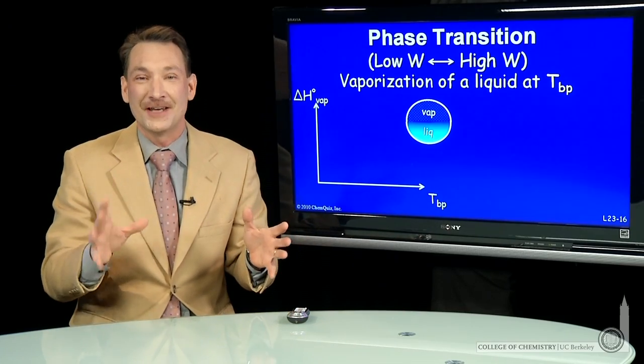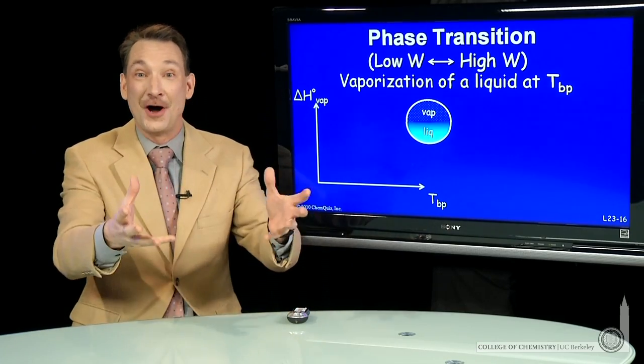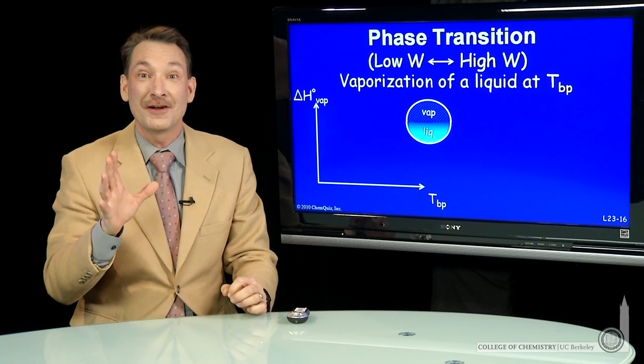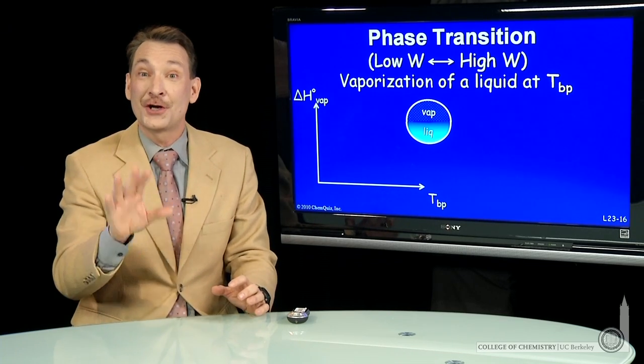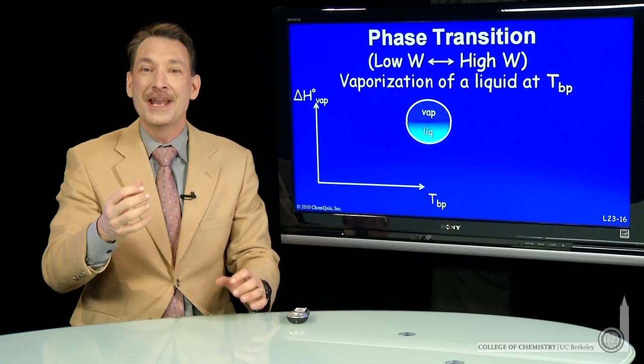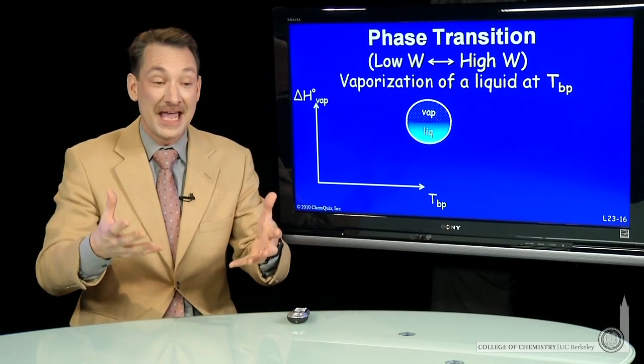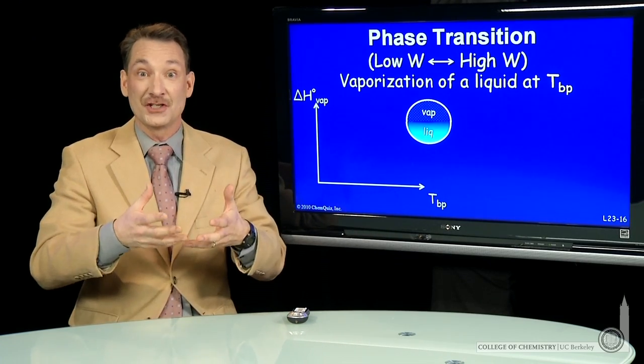One situation where the thermodynamic definition of entropy - that is, the heat evolved at a constant temperature - is particularly appealing is phase changes. That's because phase changes occur at a fixed temperature and there's a specific heat involved: the enthalpy of either vaporization or melting.